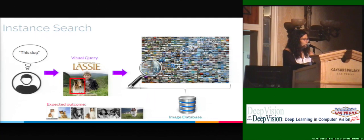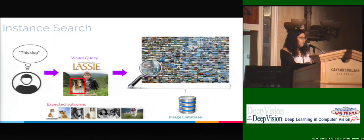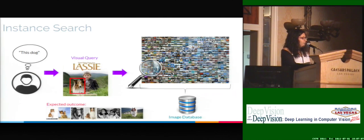Typically in the literature, recent works have proposed to tackle this problem by taking a CNN trained for classification and extracting features from it. These features are global features used to perform a first ranking, by matching features from the visual query to the images in the database. However, after this ranking based on global features, you want to take the top-ranked images and perform geometric verification or local analysis to improve retrieval performance. So you need both global and local features.